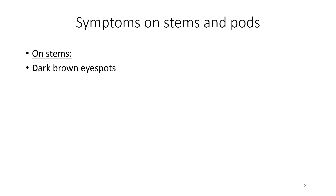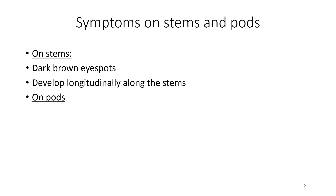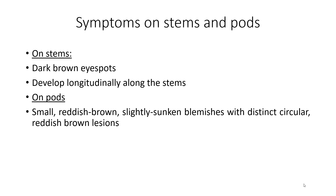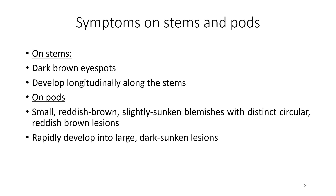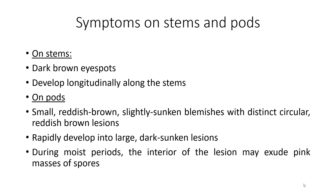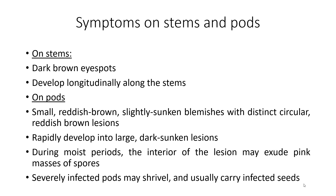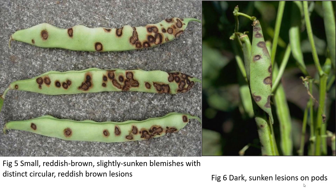Symptoms first occur on the stems and later on it spreads to the pods. On stems, the lesion appears as dark brown elongated spots which develop longitudinally along the stems. On pods, small reddish-brown, slightly sunken blemishes with distinct circular reddish-brown lesions occur. They rapidly develop into large dark sunken lesions. During moist periods, the interior of the lesion may exude pink masses of spores. Severely affected pods may shrivel and usually carry infected seeds. Figure 5 illustrates the lesions on the pods.